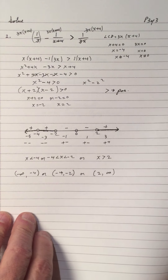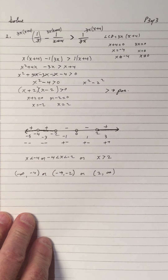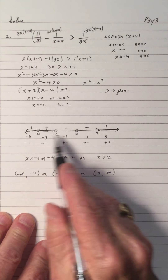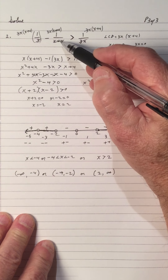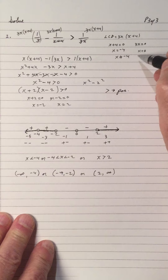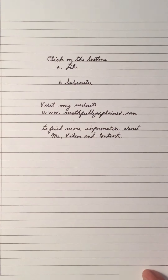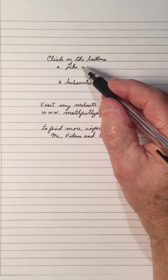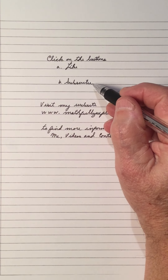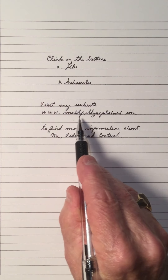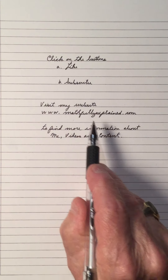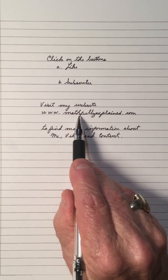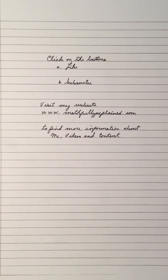That's solving inequalities that turn out to be quadratics — handled by testing numbers on the number line. And don't forget, when you have fractions, you cannot have the denominator equal 0, so those values must be excluded. If you like the video, click the like button. Subscribe if you haven't already, and visit www.mathfullyexplained.com for more content on my YouTube channel, Math Fully Explained. Thank you for viewing — hope the video was of some help!